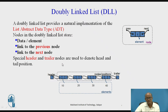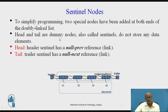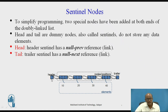Special header and trailer nodes are used to denote head and tail positions in the linked list. To simplify programming, two special sentinel nodes have been added to both ends of the doubly linked list. Head and tail are doubly linked nodes also called sentinels, and they do not store any data elements. The header sentinel has a null previous reference link, and the trailer sentinel has a null next reference link.